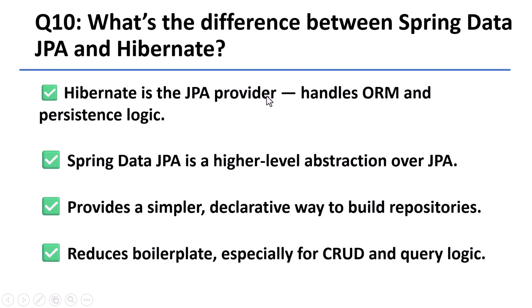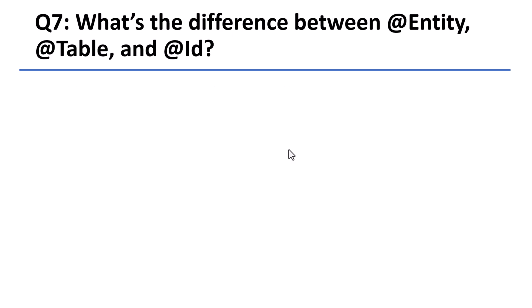In many cases, Spring handles transactions automatically for public repository methods, reducing the need for manual configuration. Question 10: What's the difference between Spring Data JPA and Hibernate? Hibernate is a JPA provider — it handles the low-level mapping between Java and SQL. Spring Data JPA sits on top of that and provides a simpler, more developer-friendly abstraction, letting you build the data access layer quickly using repository interfaces and method names without writing SQL unless you need to.